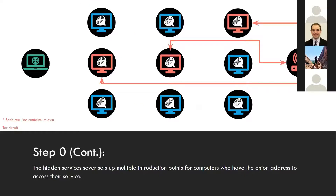Random nodes on the Tor network hold introductory points that users can try to access using an onion address. You must have the onion address to access these hidden services.